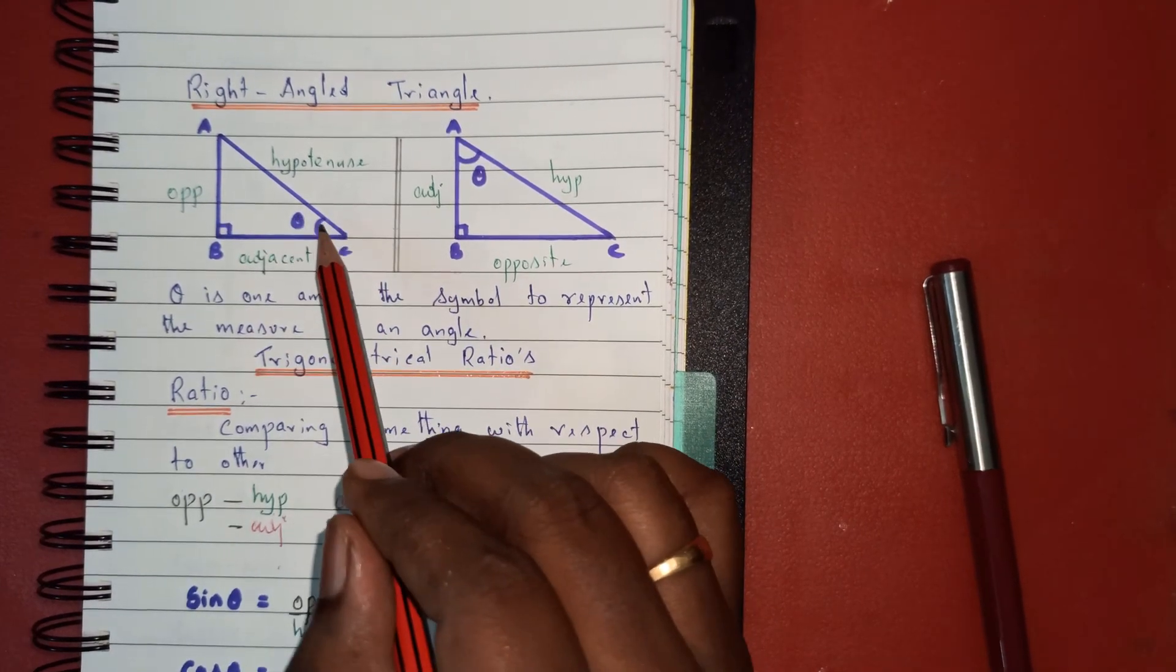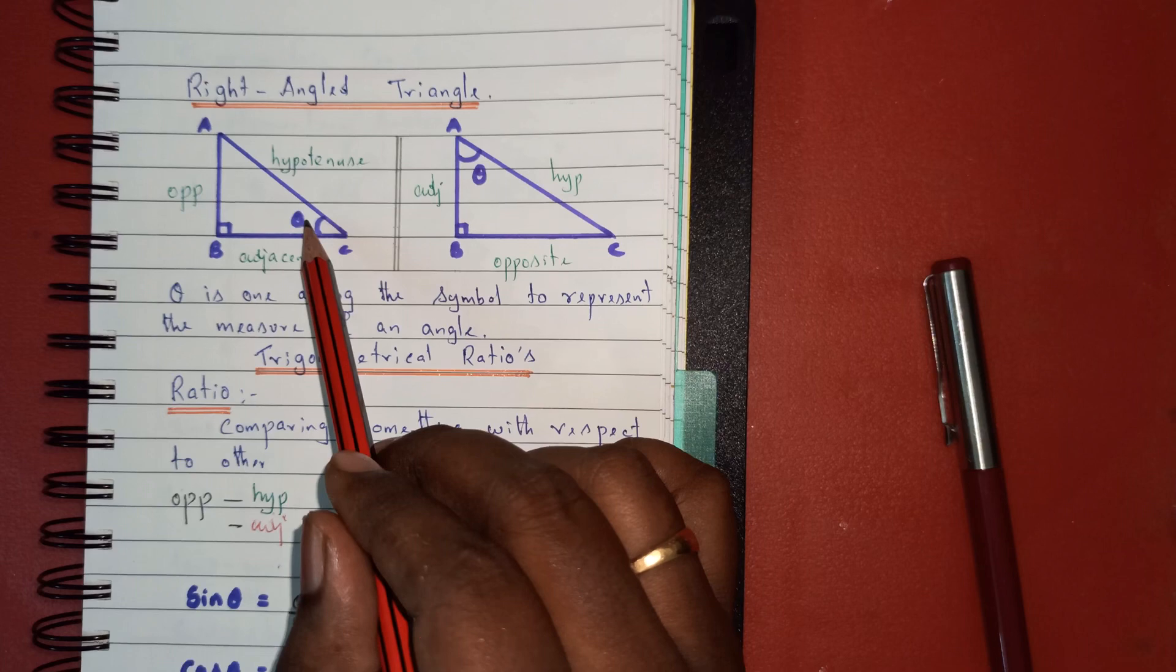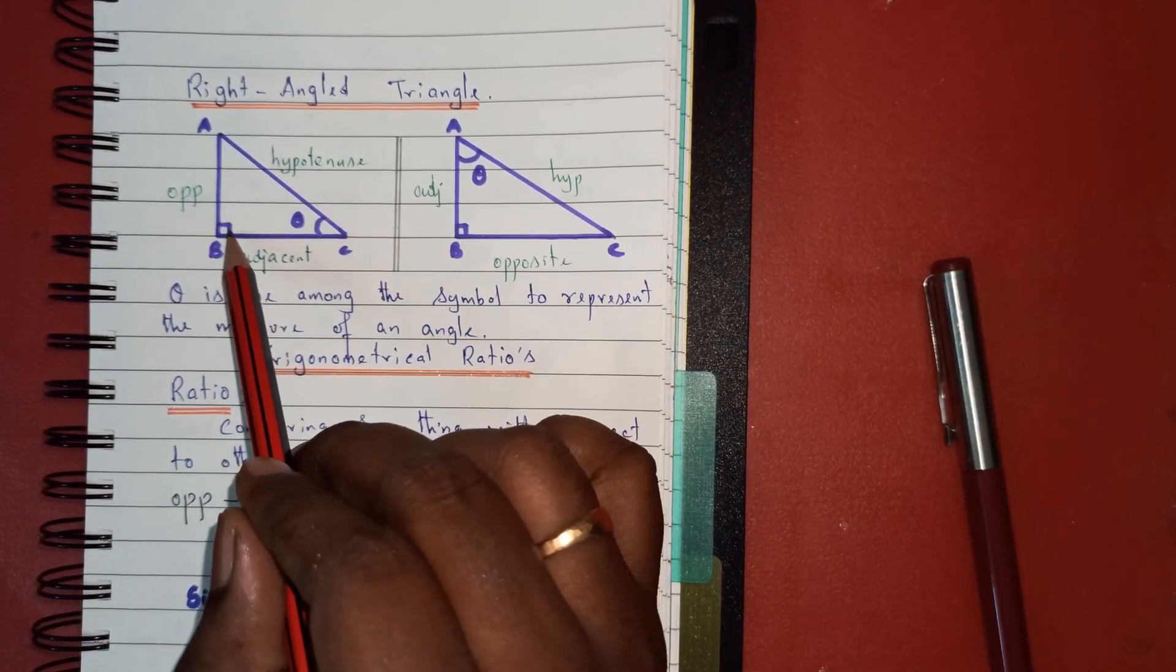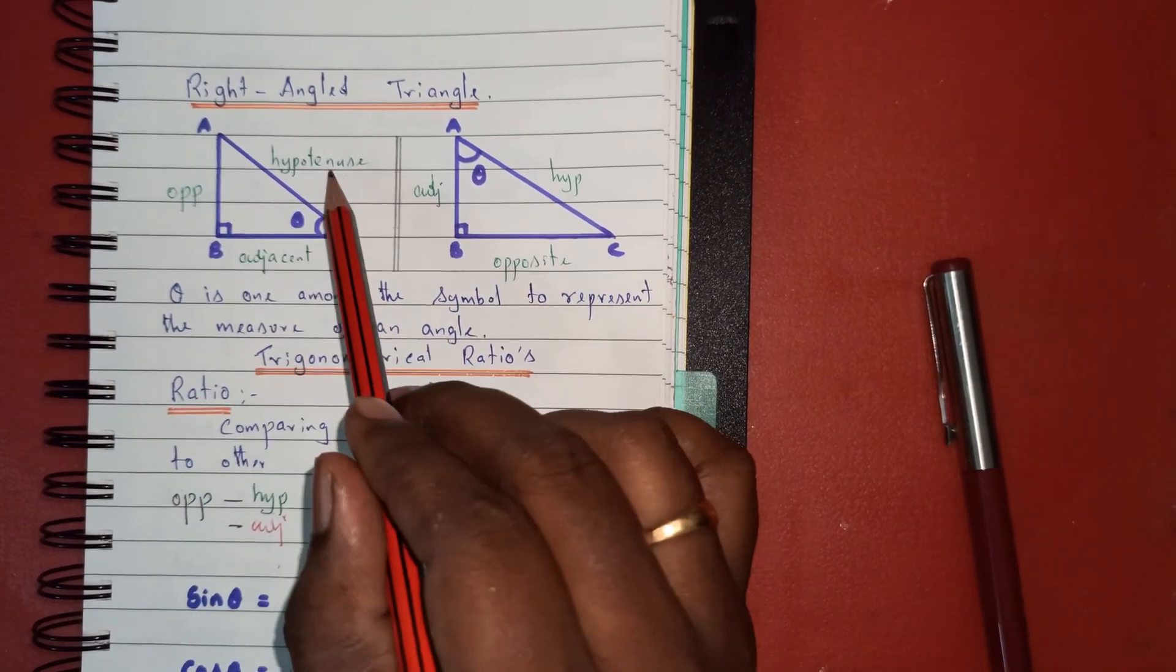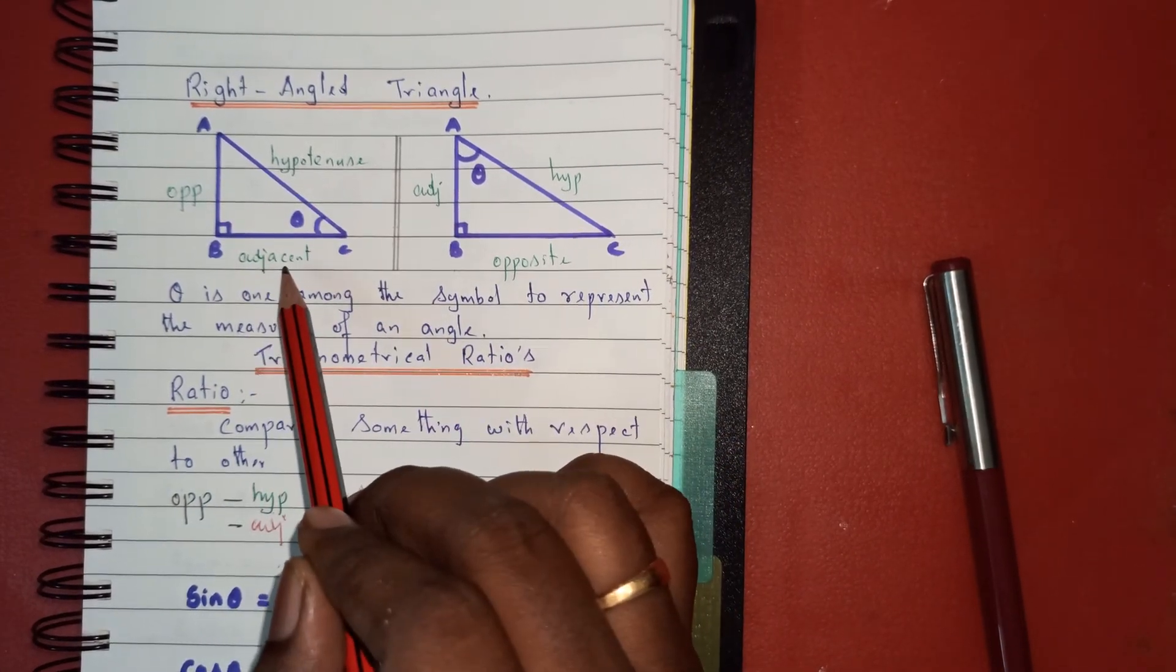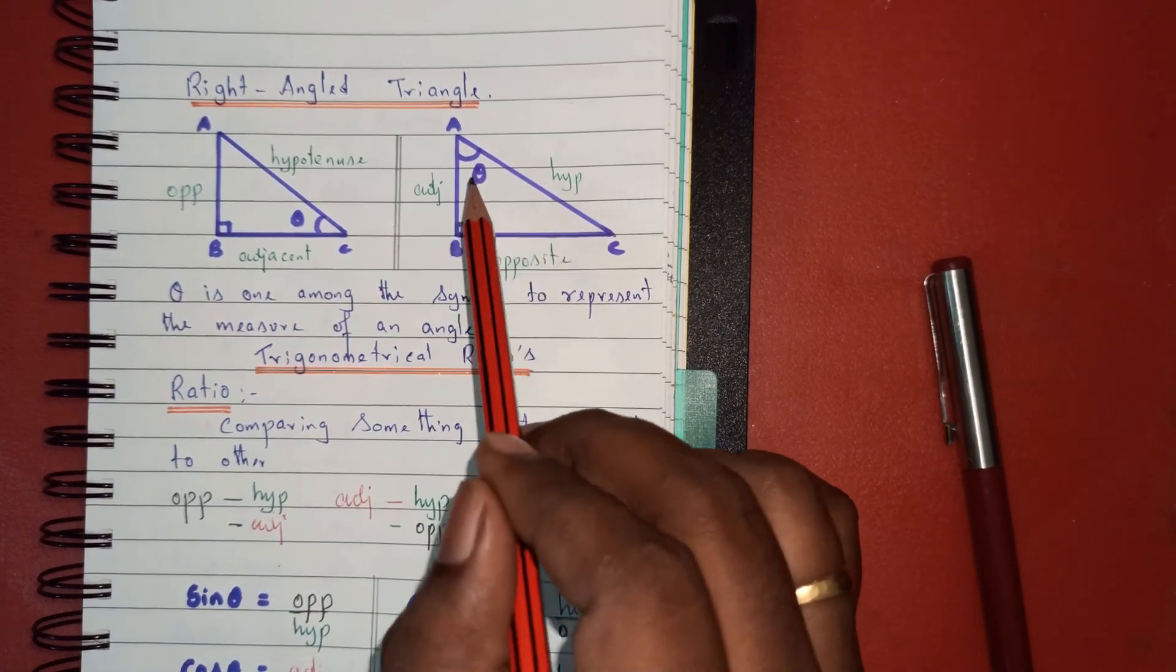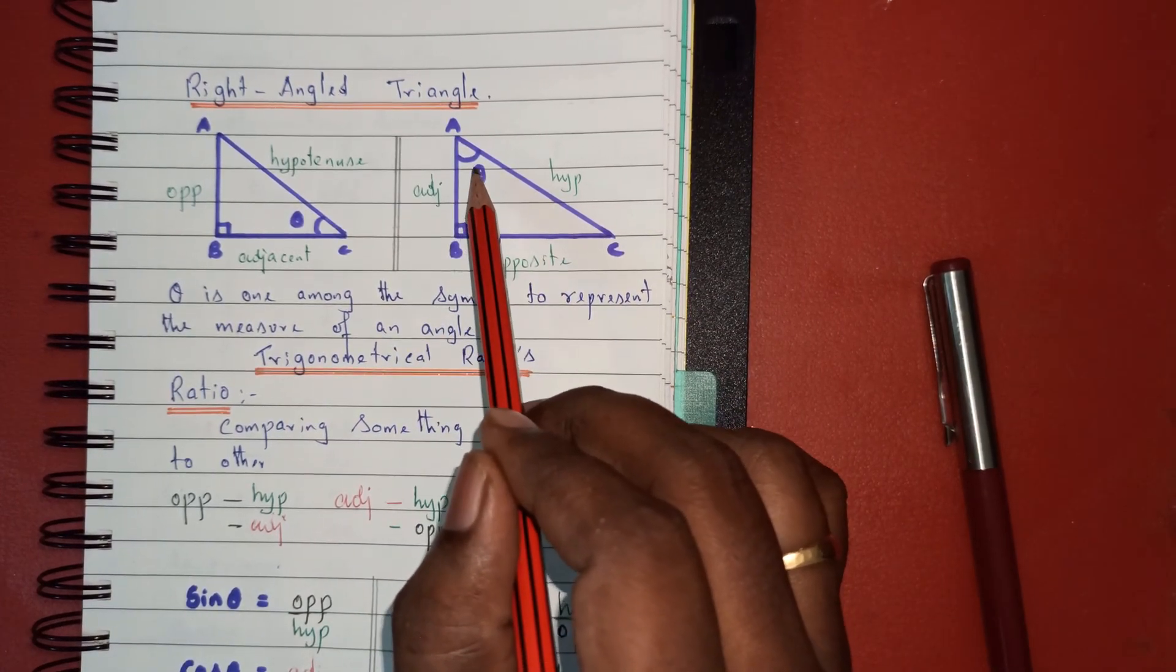The side which is opposite to theta is called the opposite side. The side opposite to 90 degrees is the hypotenuse. The remaining side is the adjacent side. Now, in the same figure, I'll fix my angle at A.